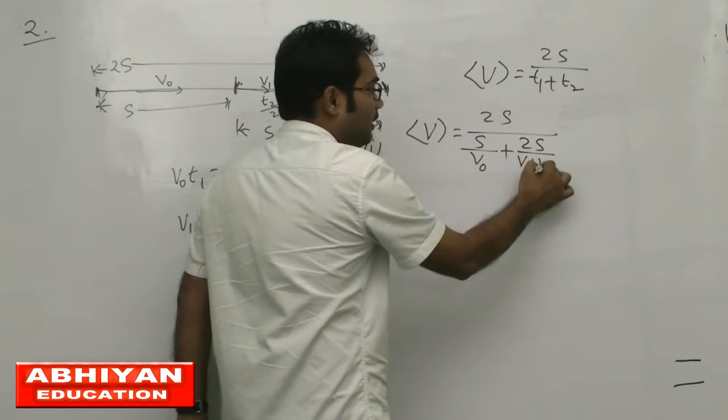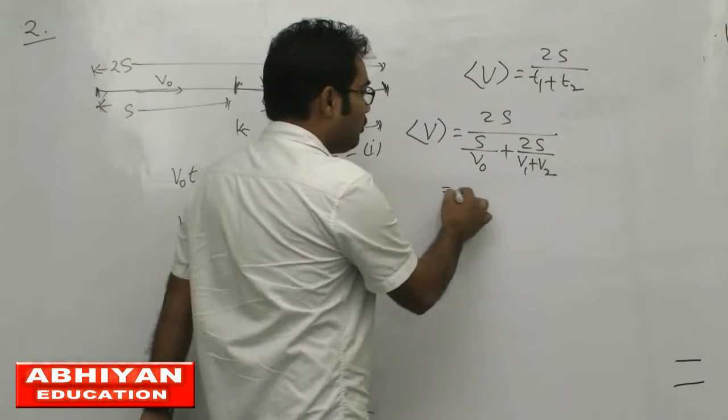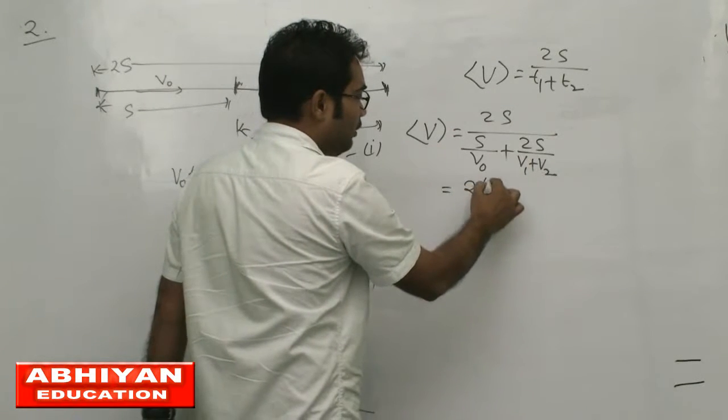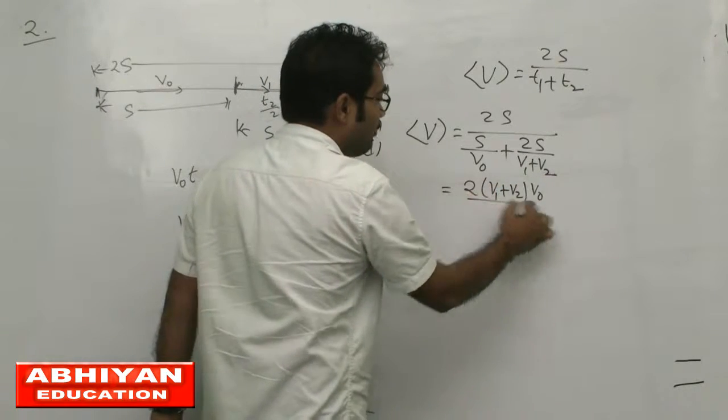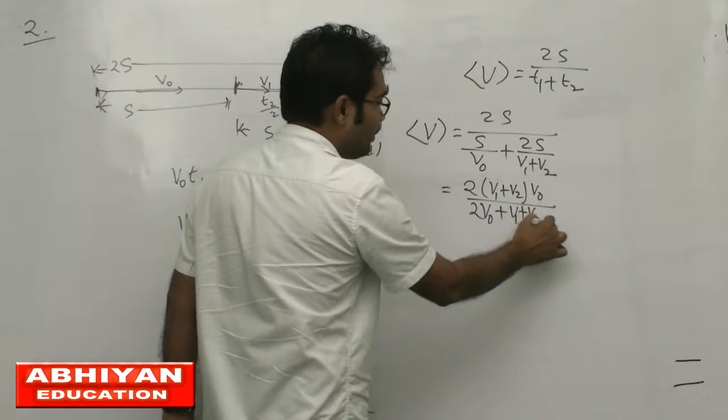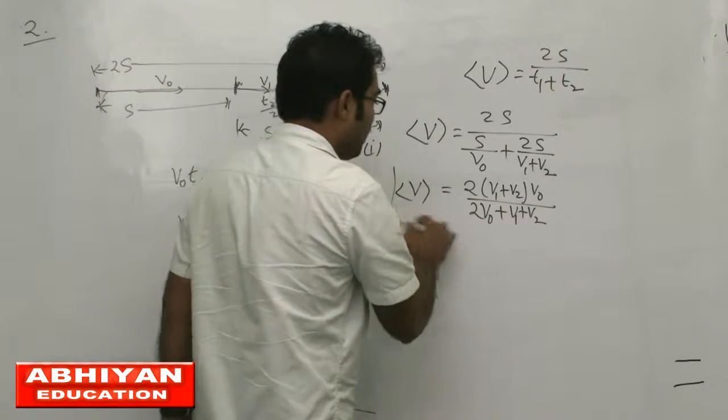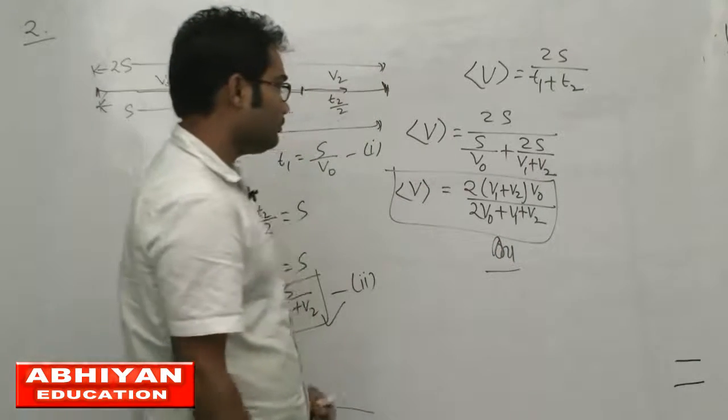Taking s common you can cancel it. Then this equation becomes 2 times v1 plus v2 times v0 divided by v0 times 2 plus v1 plus v2. This is the average velocity and this is the answer to this question.